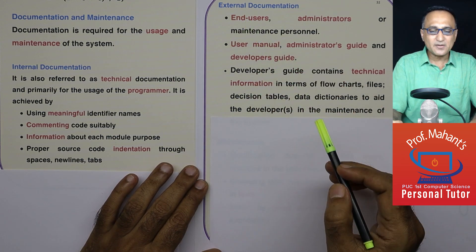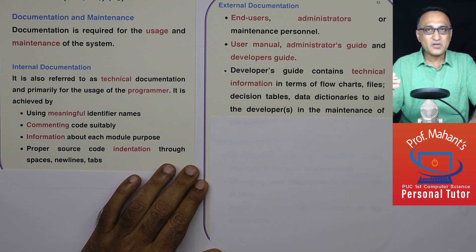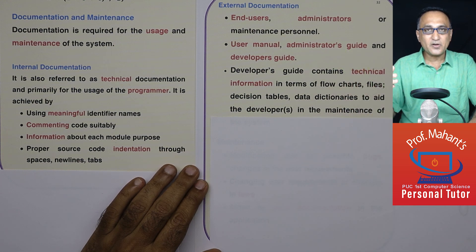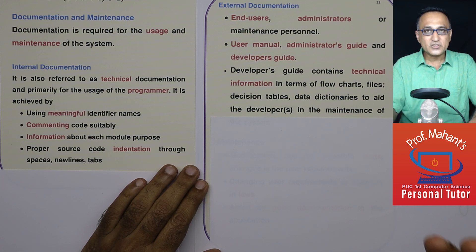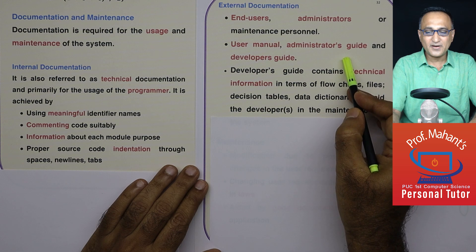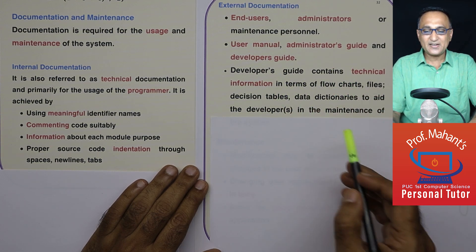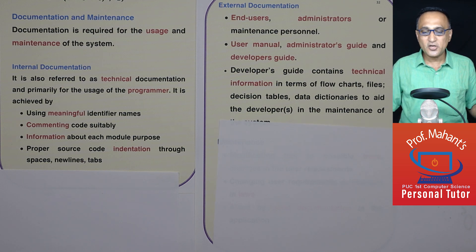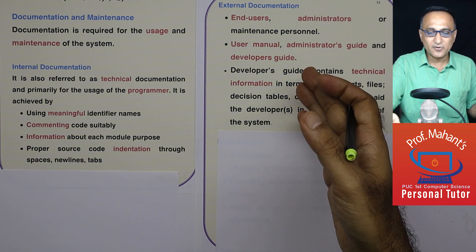For end users like you and me, you need a user manual which tells how to use the application. An administrator's guide is for officers who need to know how to set up vaccination information, capture different data — all of this is for administrators. Lastly, a developer's guide contains the logic of the application in terms of algorithms, flowcharts, data dictionaries, data tables, and decision tables, so that future technical people who are going to modify and use that application find it helpful.